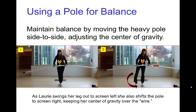We often see tightrope walkers carrying a pole. One of the things the pole is useful for in terms of maintaining balance is that if you have a heavy pole, you can adjust the total center of gravity by shifting the pole from side to side. Here we see Lori standing on a pipe, and as she's crossing one foot in front of the other to walk forward, she brings her leg to the screen left side and naturally shifts the pole to the screen right side, keeping the total center of gravity over her foot.